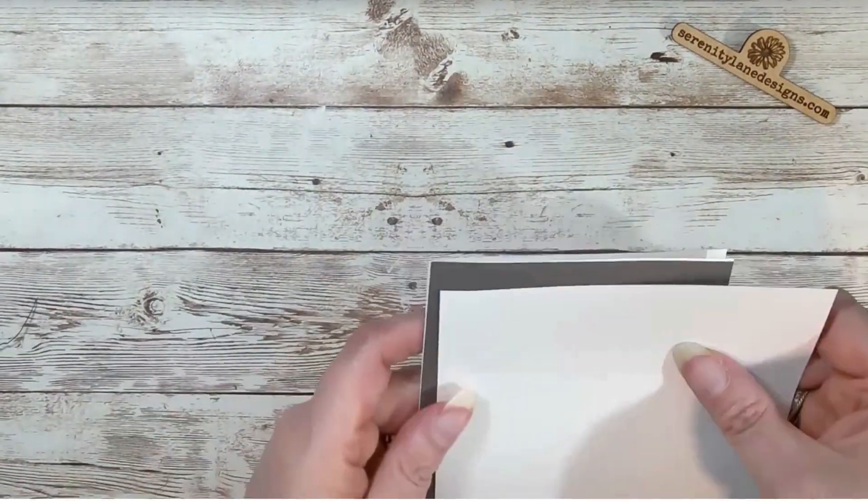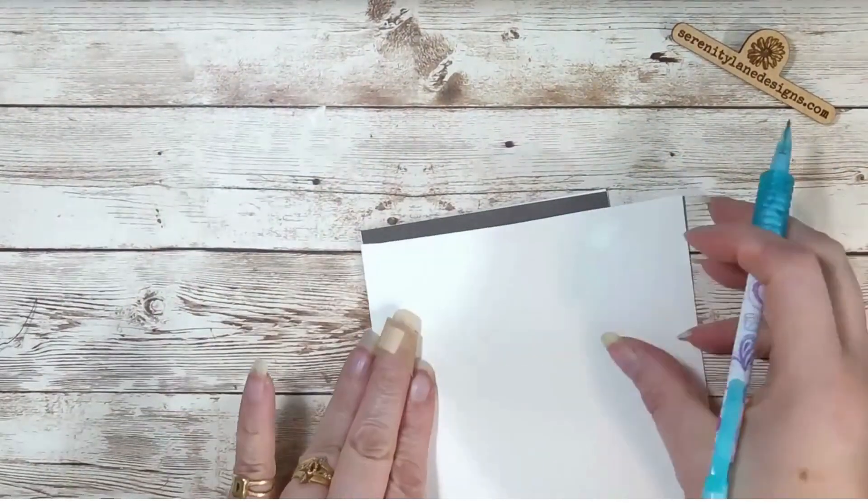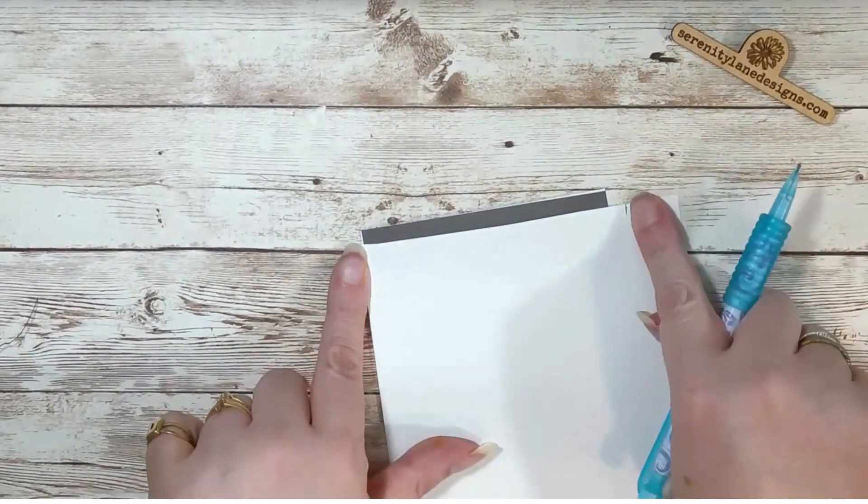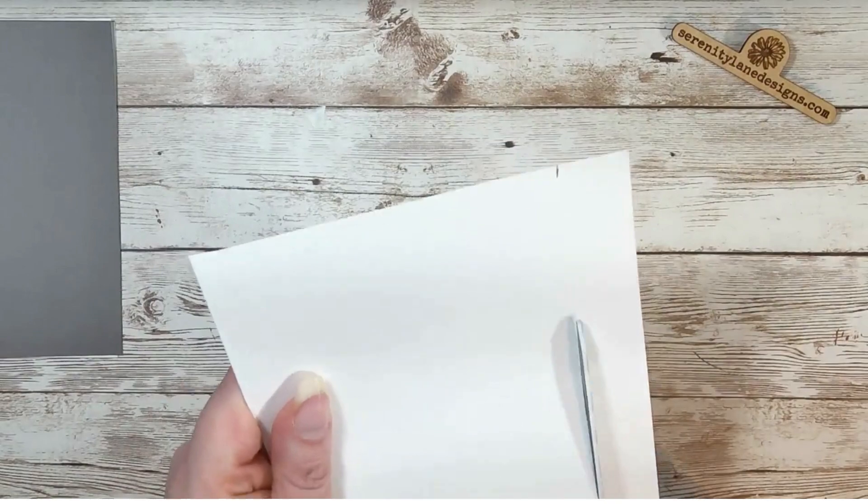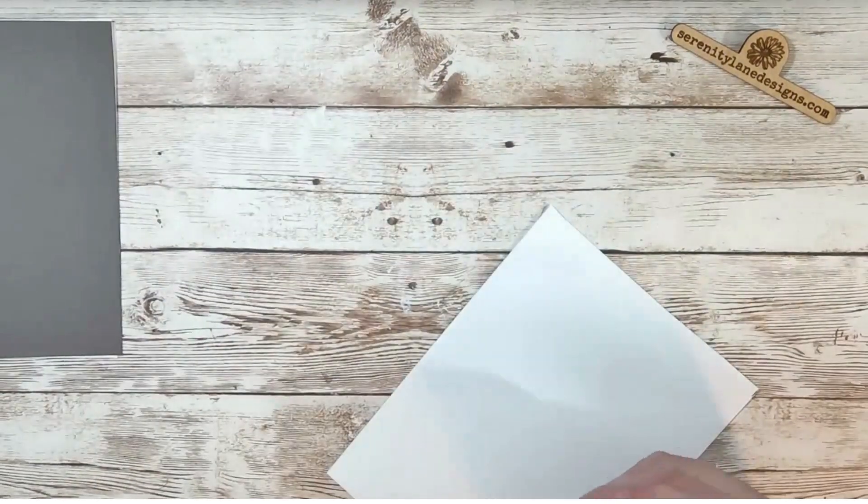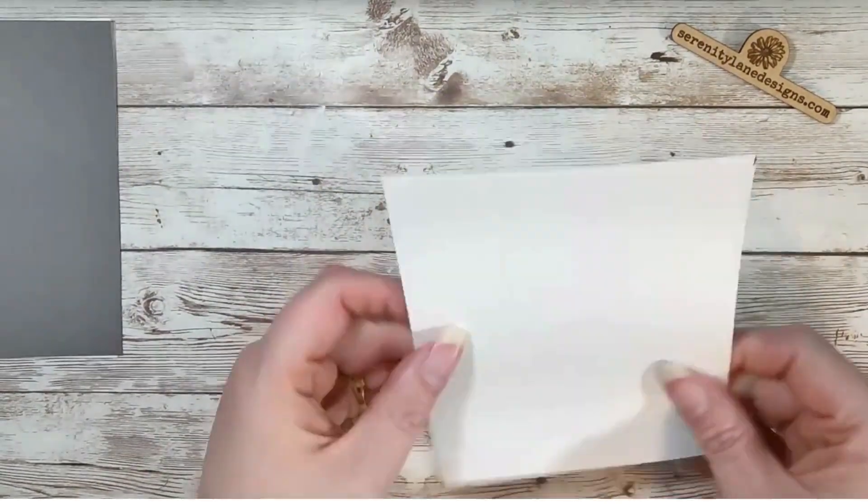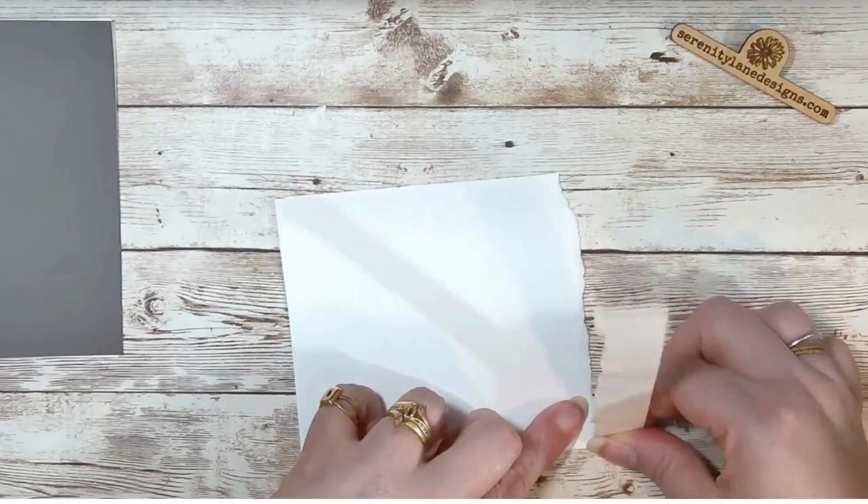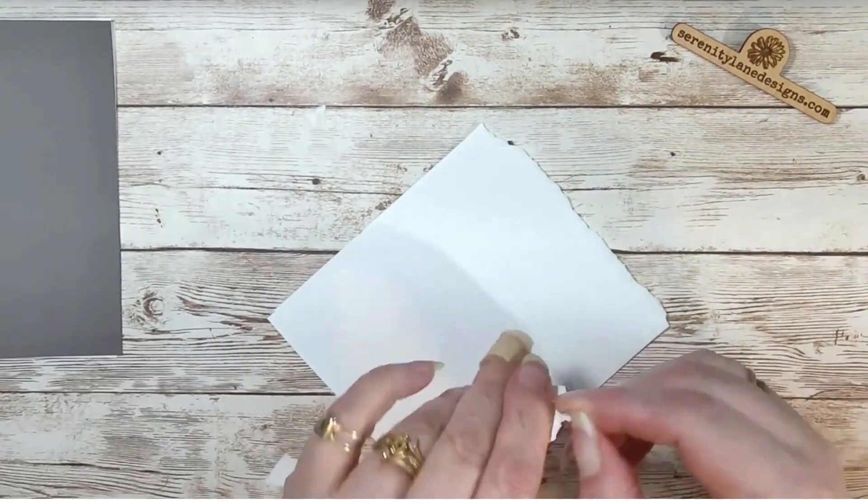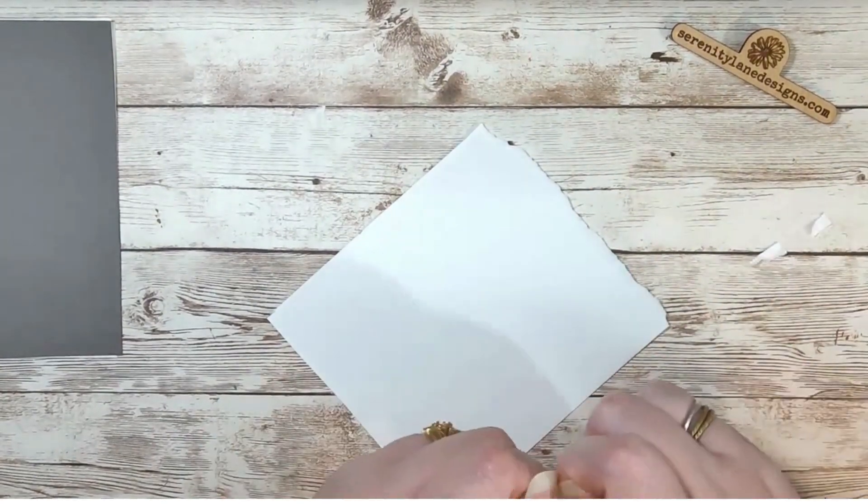Next you're going to take a piece of white cardstock. And you want to make sure that it's a little bit longer than your card. And you're simply going to just tear it into strips. It is going to make the strips for the mummy.